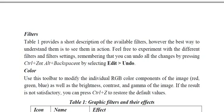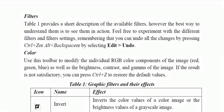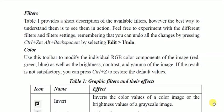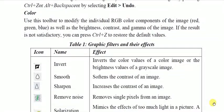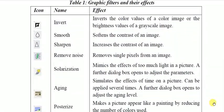In the Color toolbar, you can modify the RGB (Red, Green, Blue) color components, as well as change the brightness, contrast, and gamma of the image. If a result is not right, press Ctrl+Z to undo the effect. For filters: Invert inverts the color values of a color image and the brightness values of a grayscale image. Smooth softens the contrast of an image.